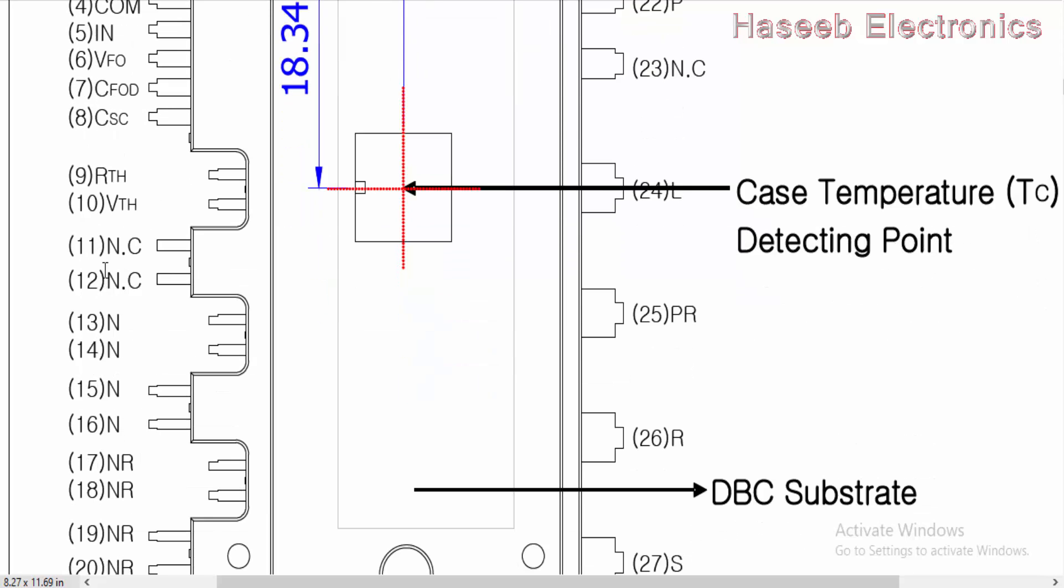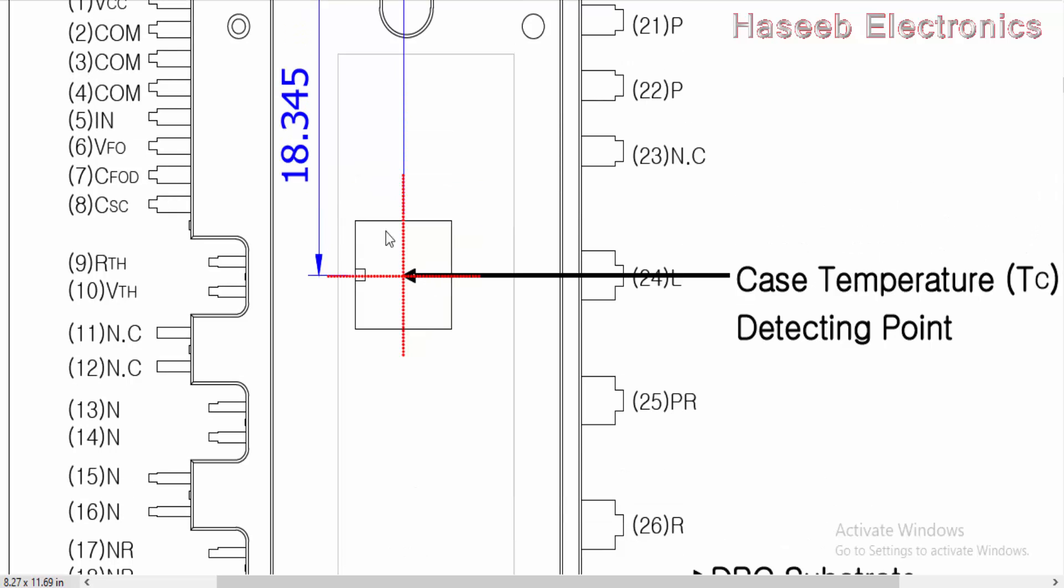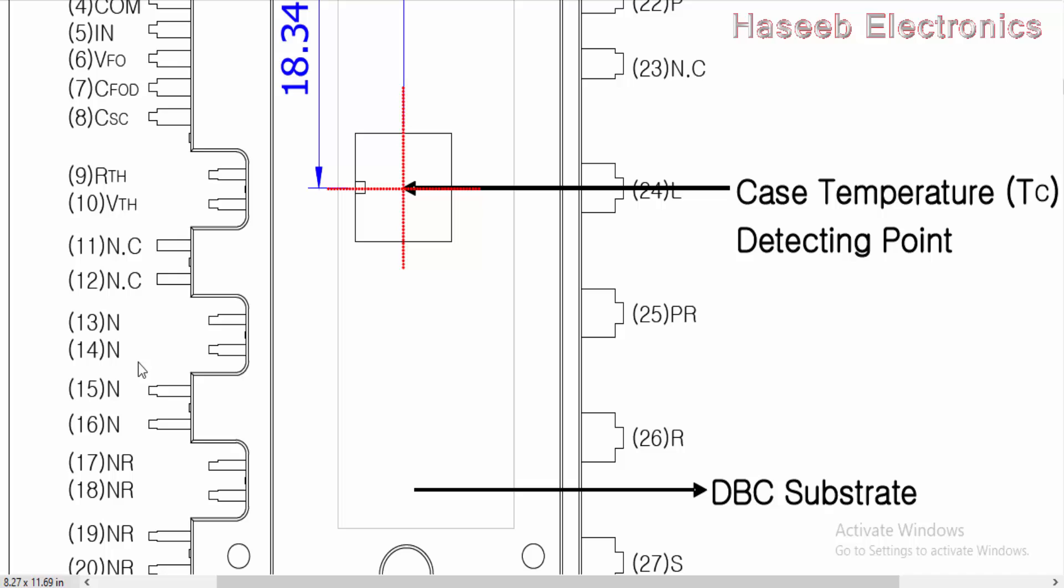Then we have RTH and VTH. These two pins are used to monitor the temperature of this module, its substrate temperature. Internal 50 Kiloohm at 25 degree centigrade temperature sensor is used here. That is NTC. When its temperature will reach at 100 degree, internal resistance of this NTC will decrease up to 3 Kiloohm. Pin number 11 and 12 not connected.